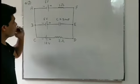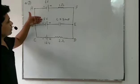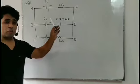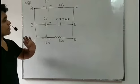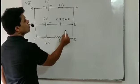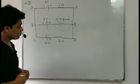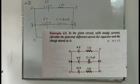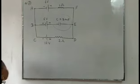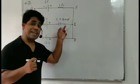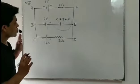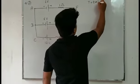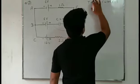Question number three. We are given a 6V battery, a 12V battery, resistances of 1 ohm and 2 ohm, and a capacitor of 5 microfarad capacitance. He is asking us to find the potential difference across the 5 microfarad capacitor as well as its charge. The circuits are given in steady state.